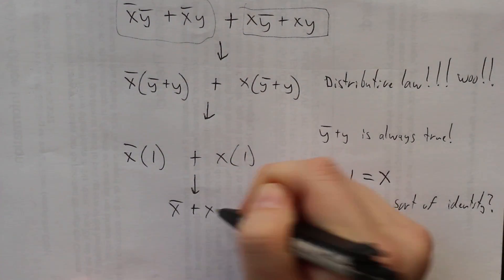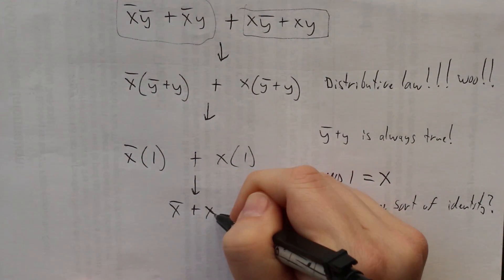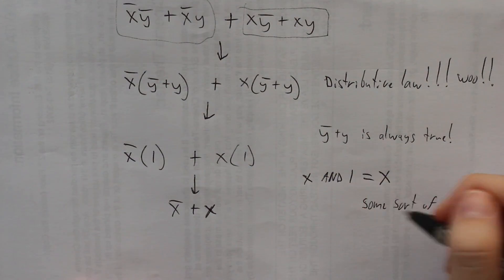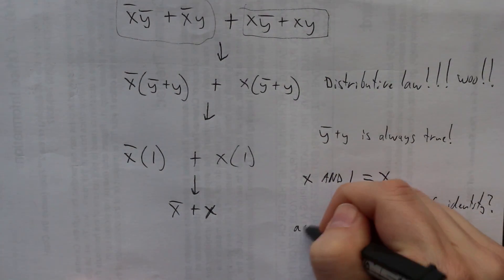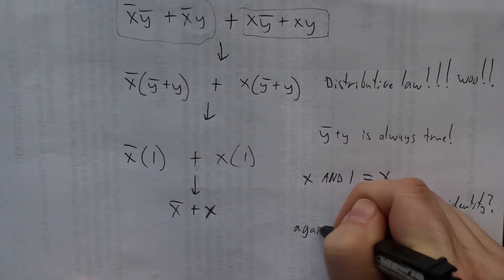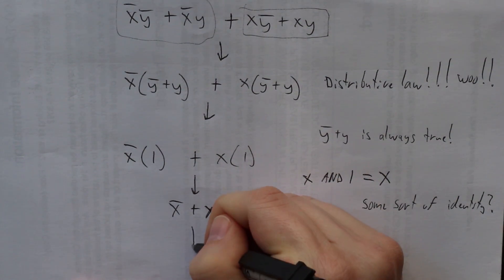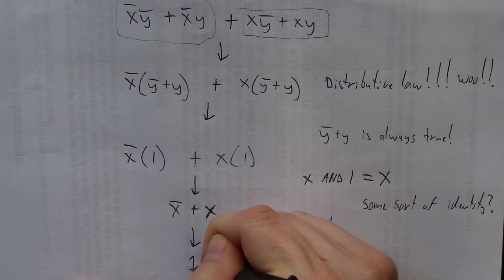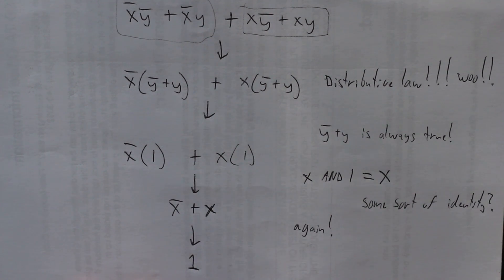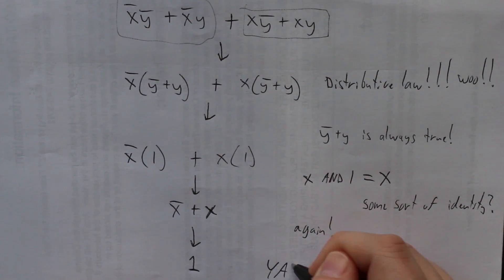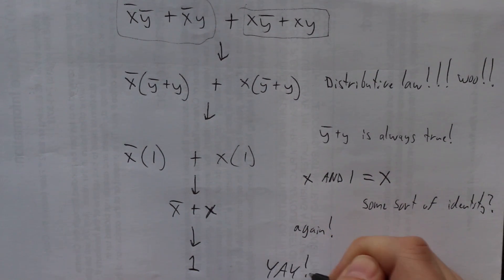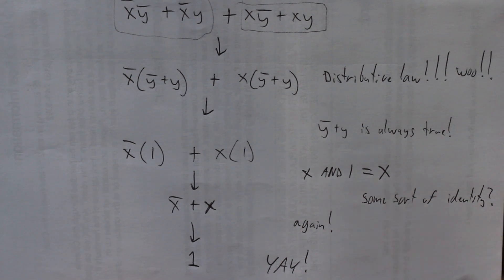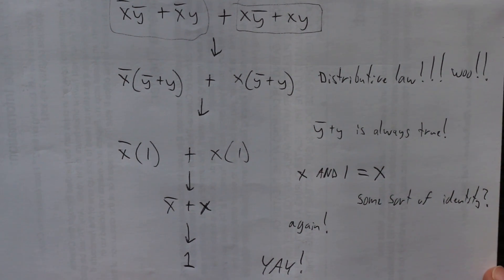So then I can just rewrite this as NOT X OR X. And once again, it's the same law I came across before — like "to be or not to be." There's something poetic about that. It is always going to be true. So I can just rewrite this entire function as the number one.